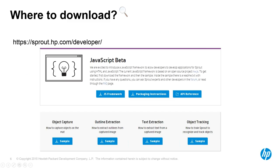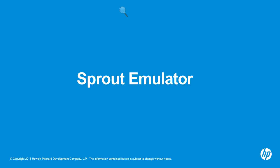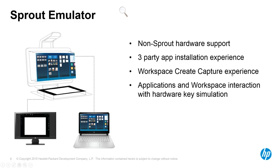That's the JavaScript portion of the live demo. The JavaScript framework is available now at sprout.hp.com/developer. All the examples I've shown are available to download, along with the framework itself, API reference, and packaging documentation. We also have an emulator. We recognize that getting Sprout hardware may not always be available, but you can still develop in simulation mode. What we've added to the development toolset is the Sprout emulator.